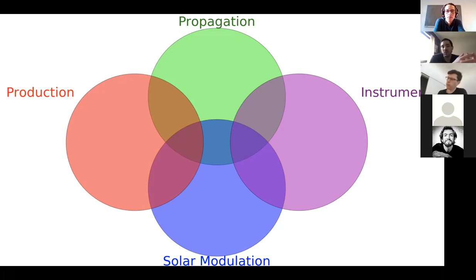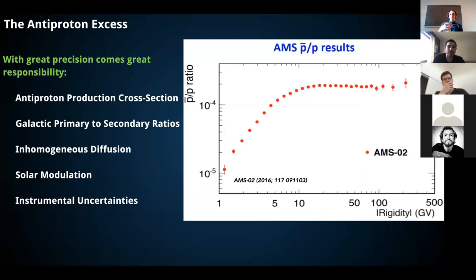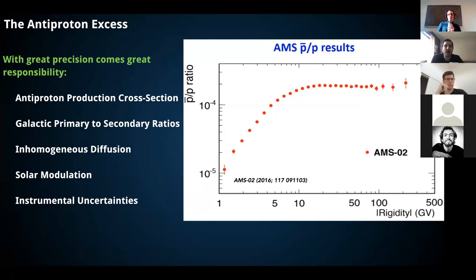Finally, you have to deal with instrumental uncertainties: how is our instrument performing, are we measuring all antiprotons correctly, are there important systematics? The problem is that with great precision comes great responsibility. You not only have to solve all these systematic uncertainties, you need to solve them all at the 1% level because the data is accurate at the 1% level, and the excess tentatively due to dark matter is a few-percent-level excess.